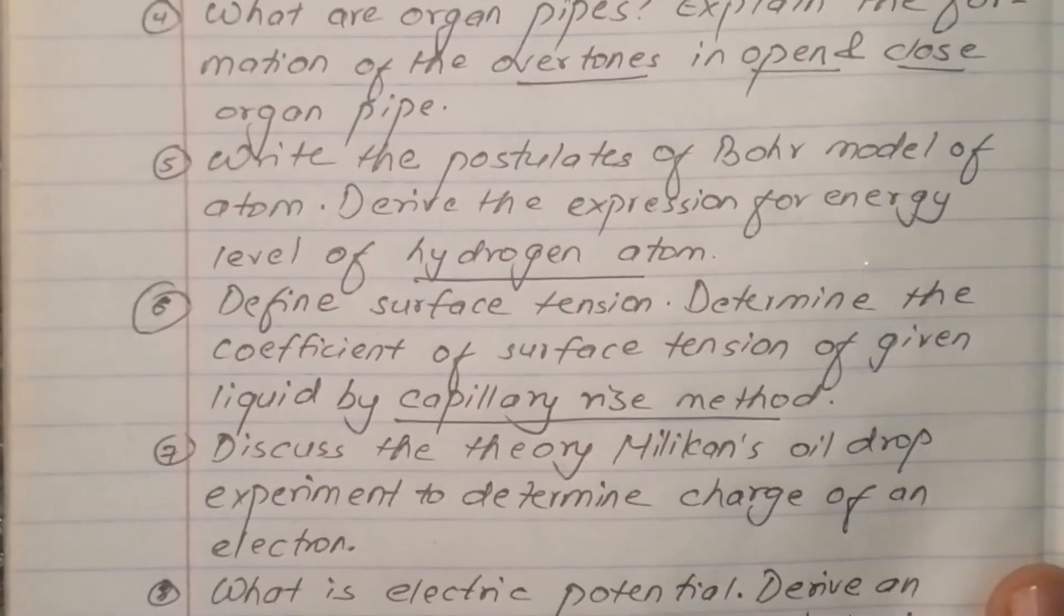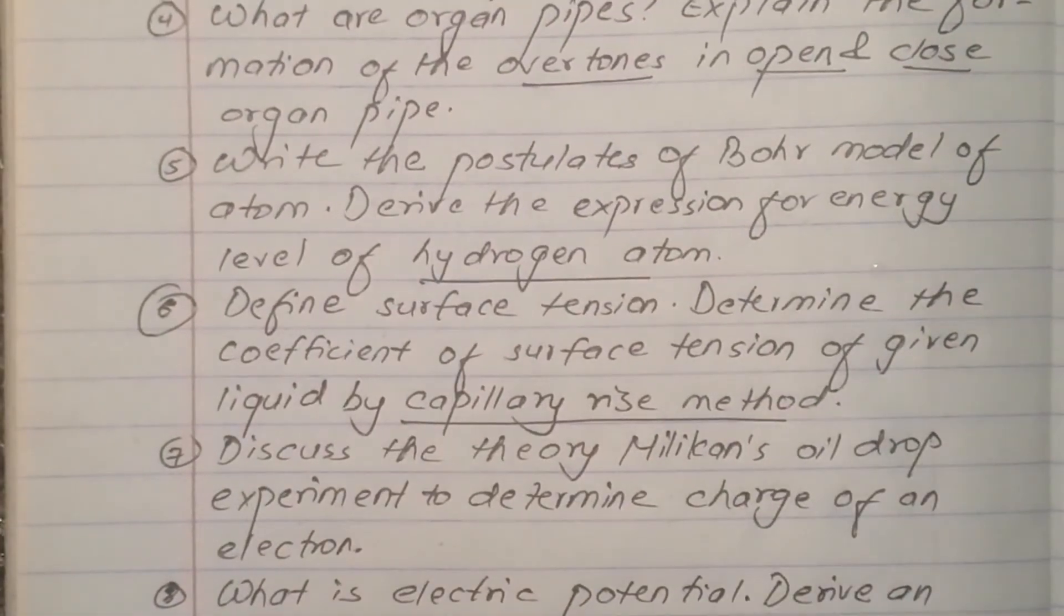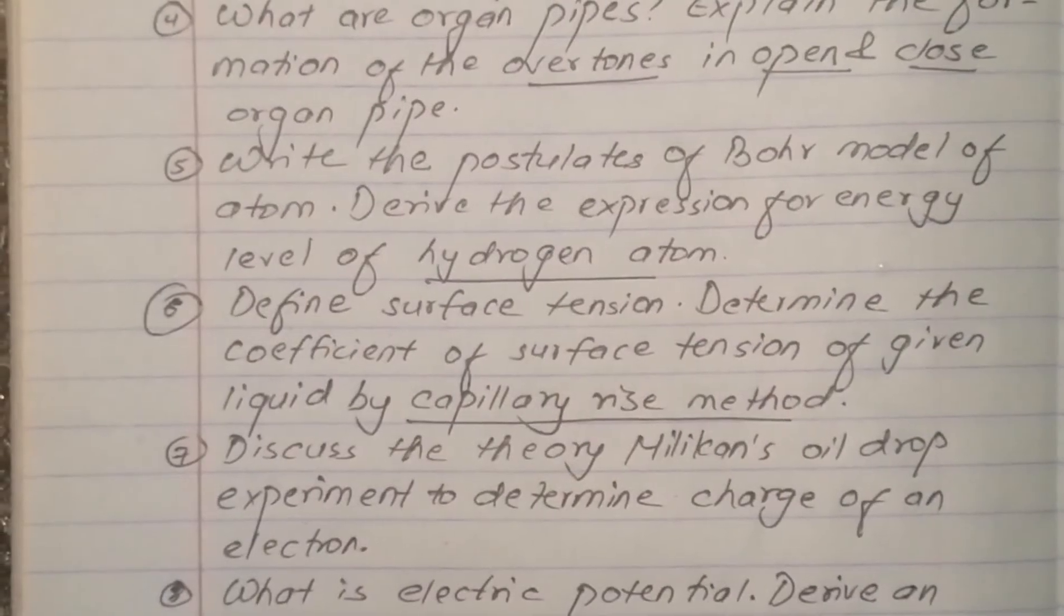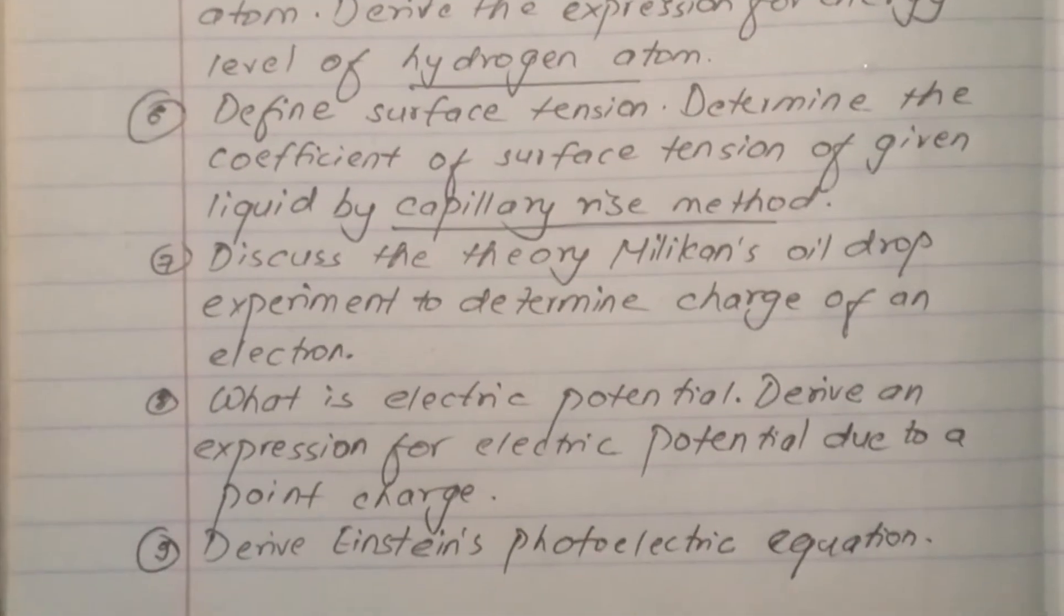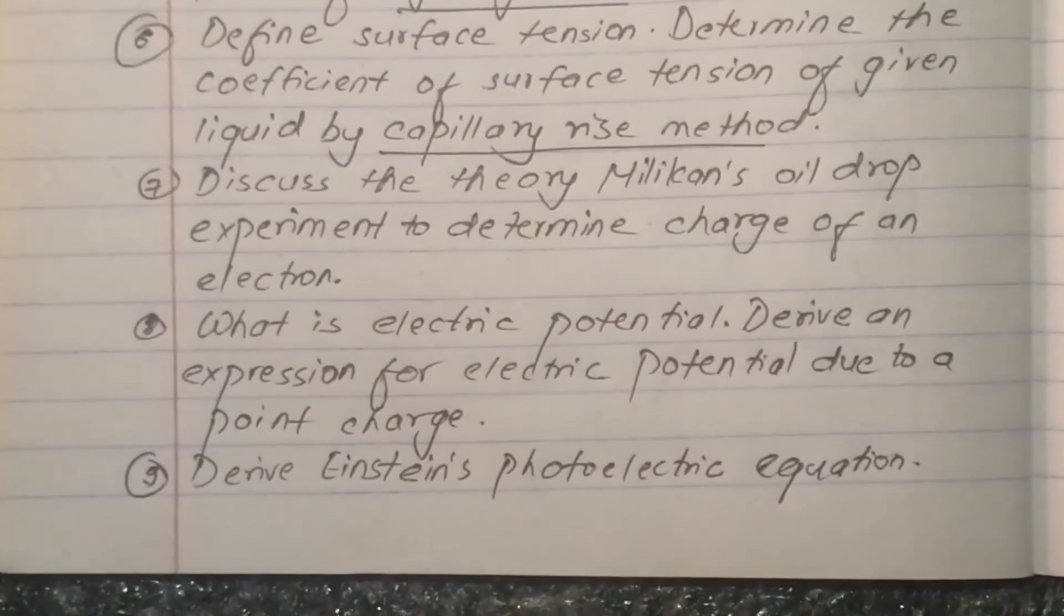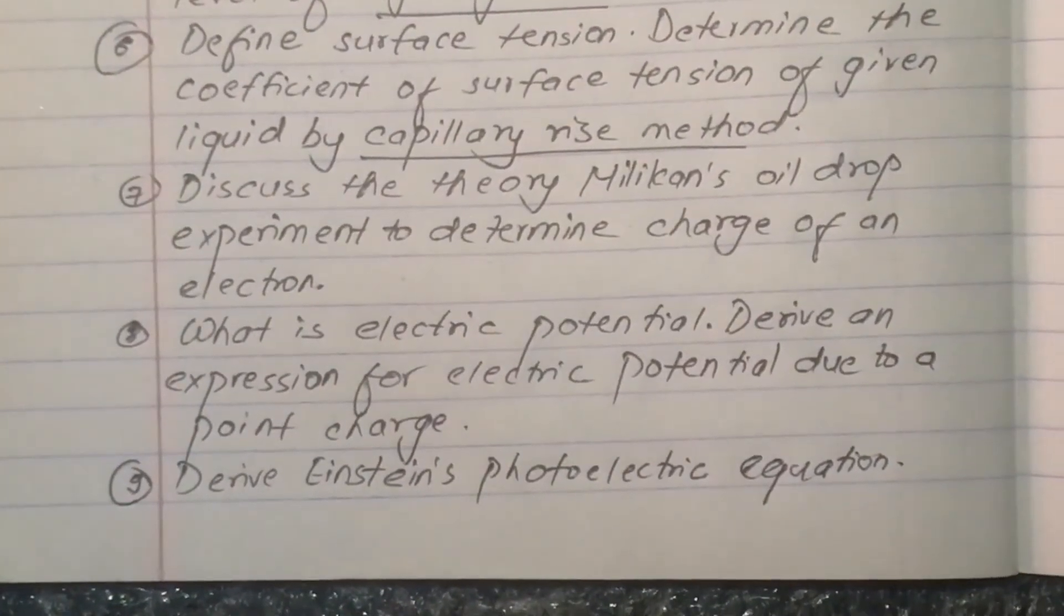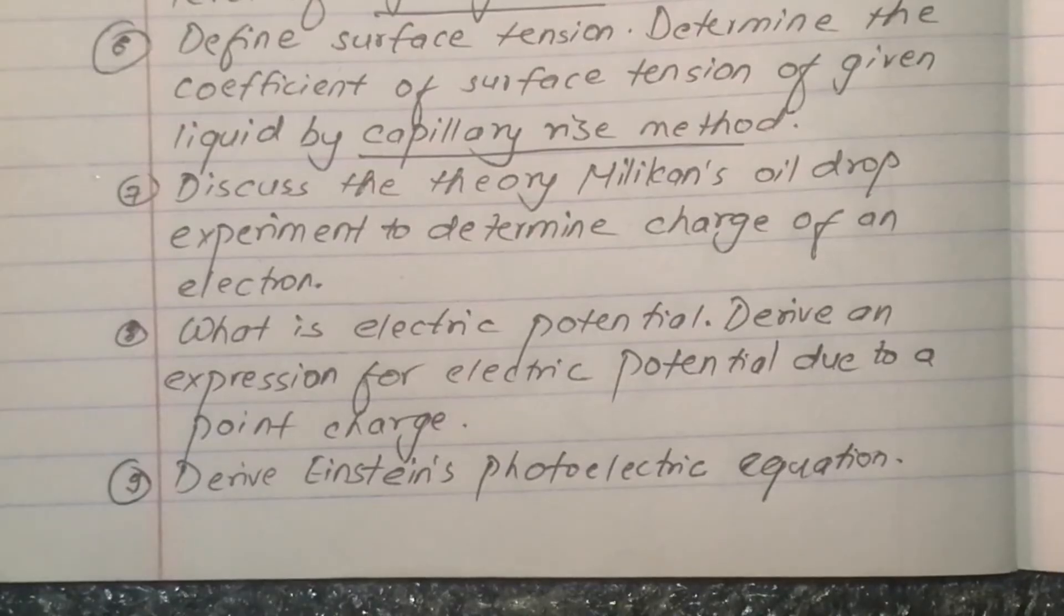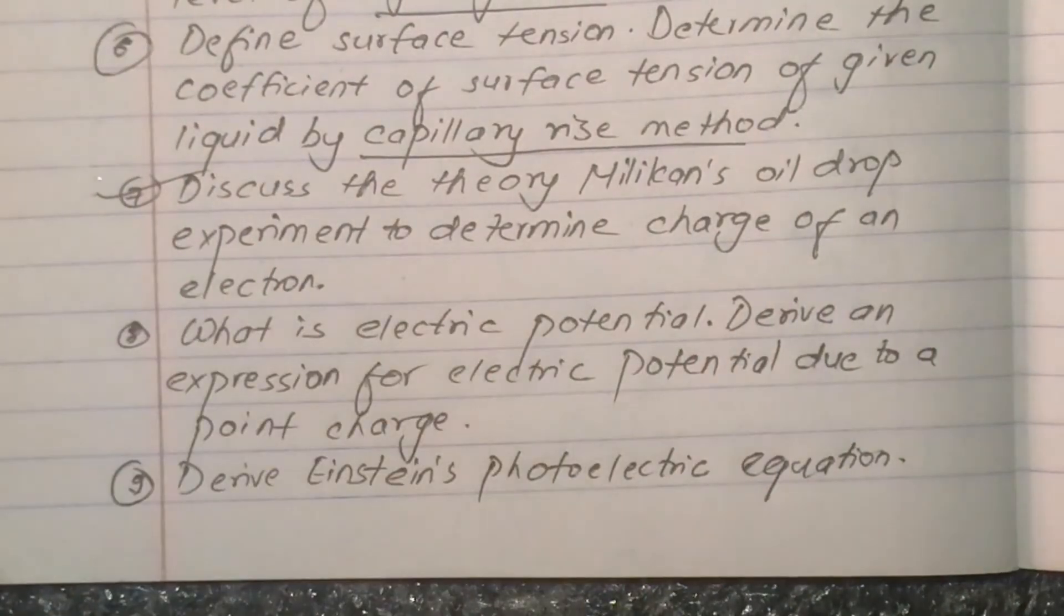Question number seven: Discuss the theory of Millikan's oil drop experiment to determine charge of an electron. What is electric potential?